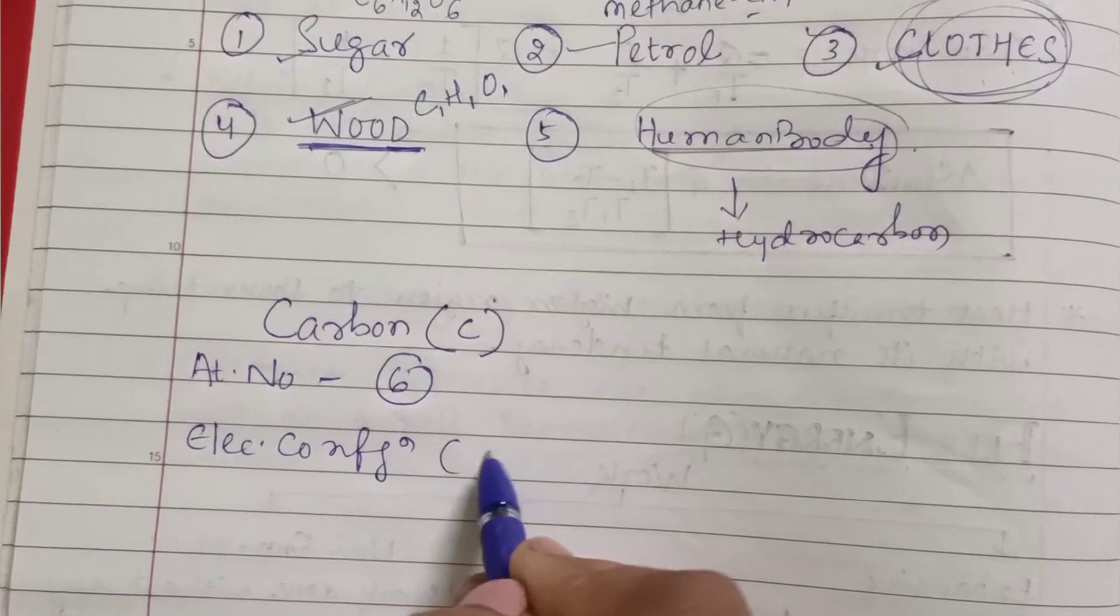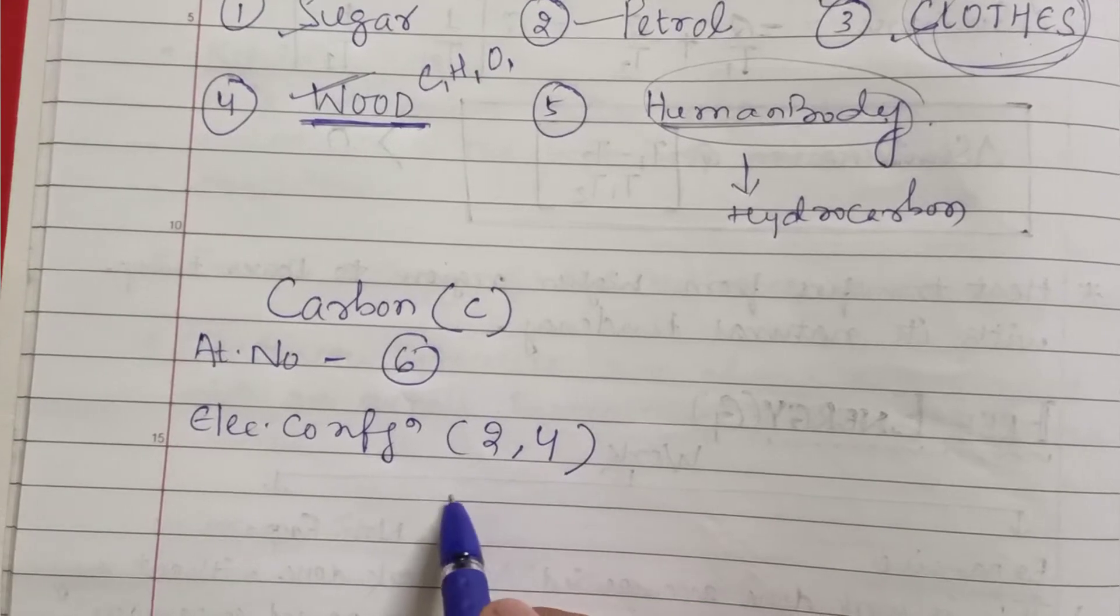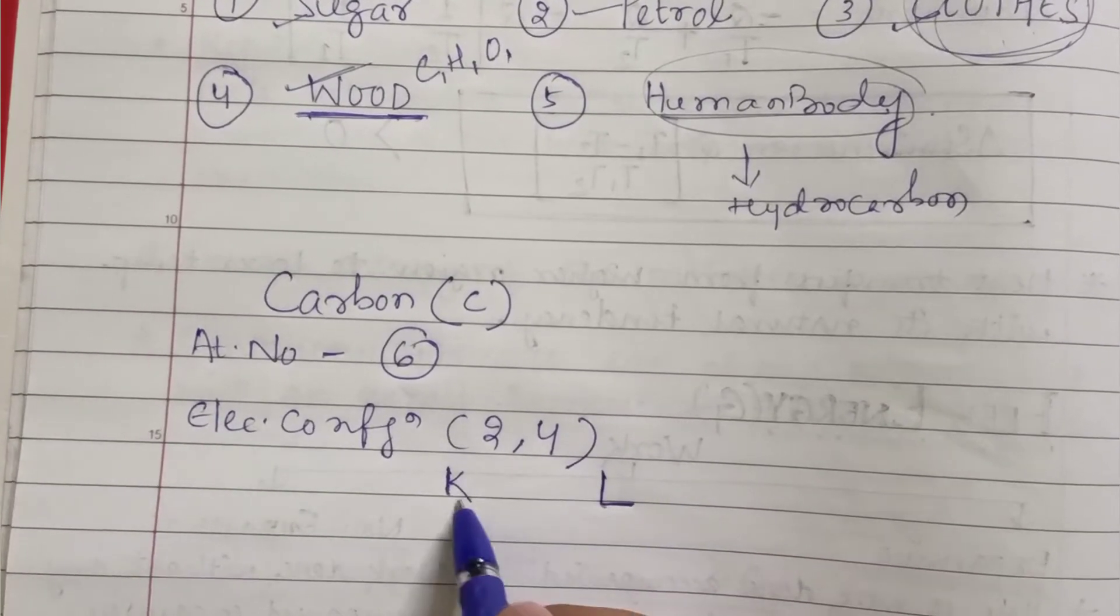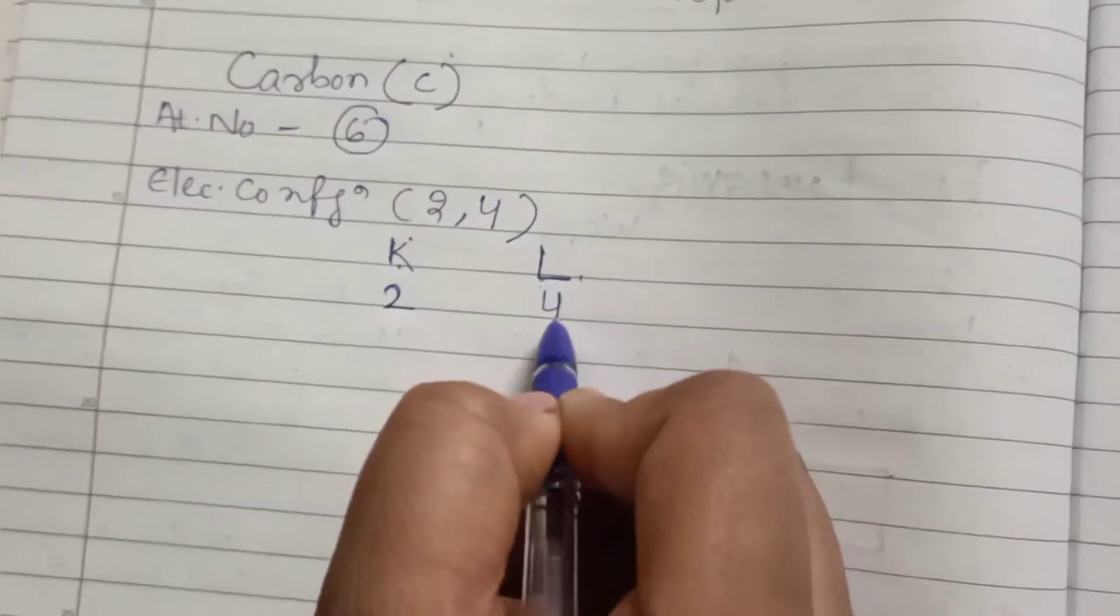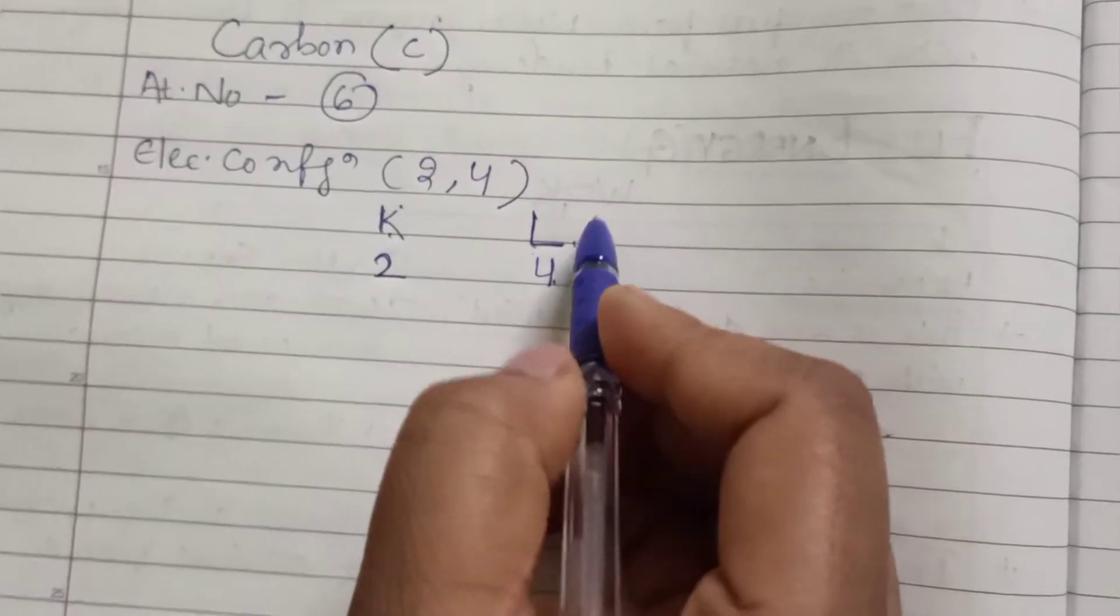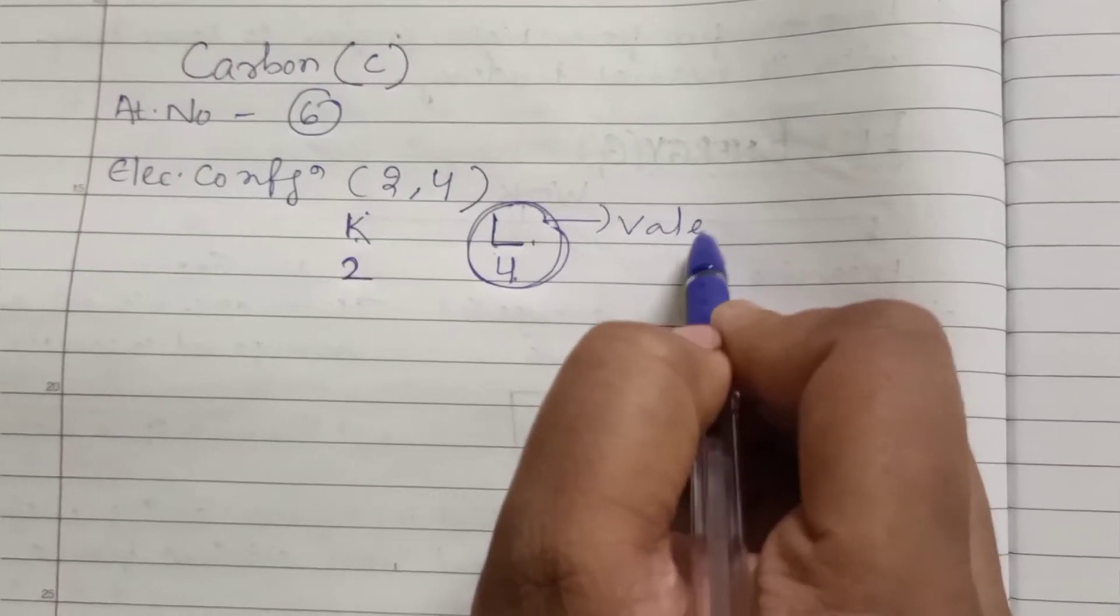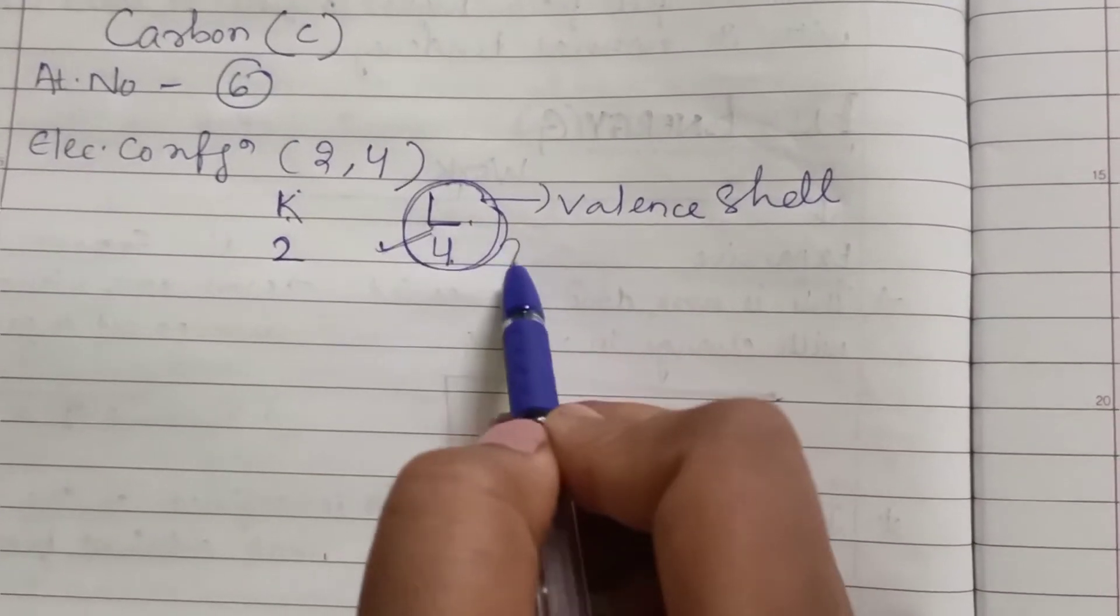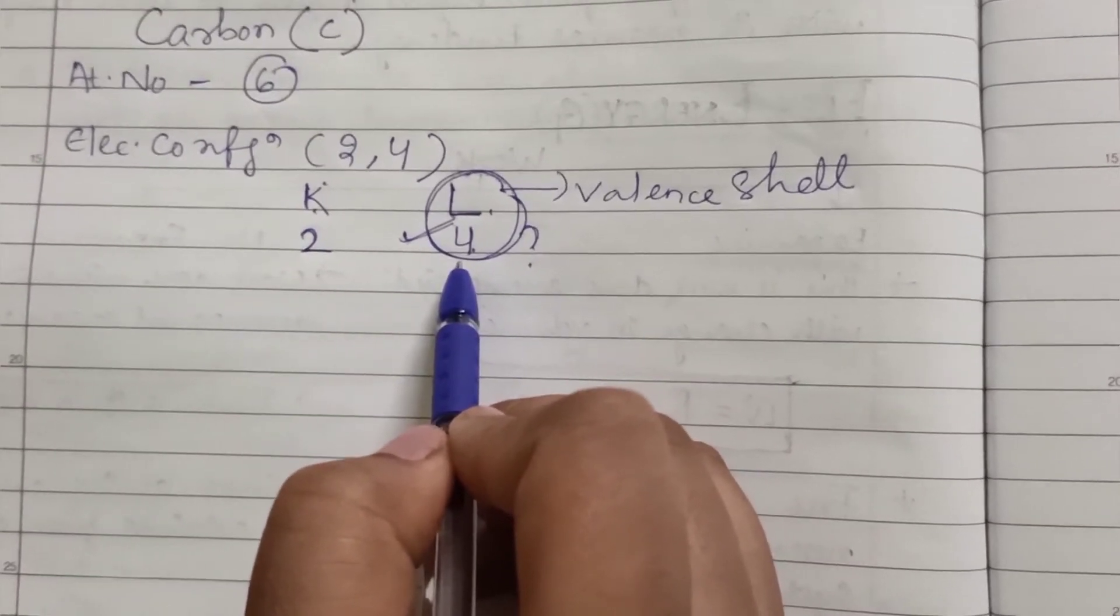So its electronic configuration becomes 2,4. It will be having the shells - that is the K and the L shells. There will be two number of electrons in the K shell and four number of electrons in the L shell. As we know, the last shell is always known as the valence shell, and it contains four number of electrons.